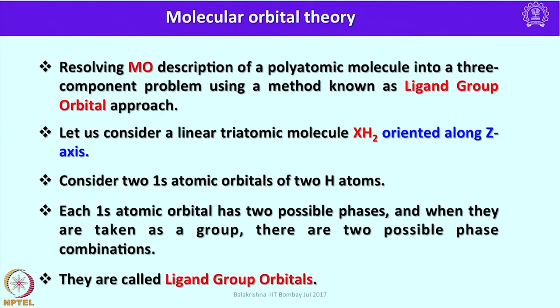Ligand group orbitals are extensively used in coordination compounds. Consider a linear triatomic molecule XH2 oriented along the Z direction — consider the two 1s atomic orbitals of the two hydrogen atoms. Each 1s atomic orbital has two possible phases, and when taken as a group there are two possible phase combinations. These two possible phase combinations are essentially called ligand group orbitals.